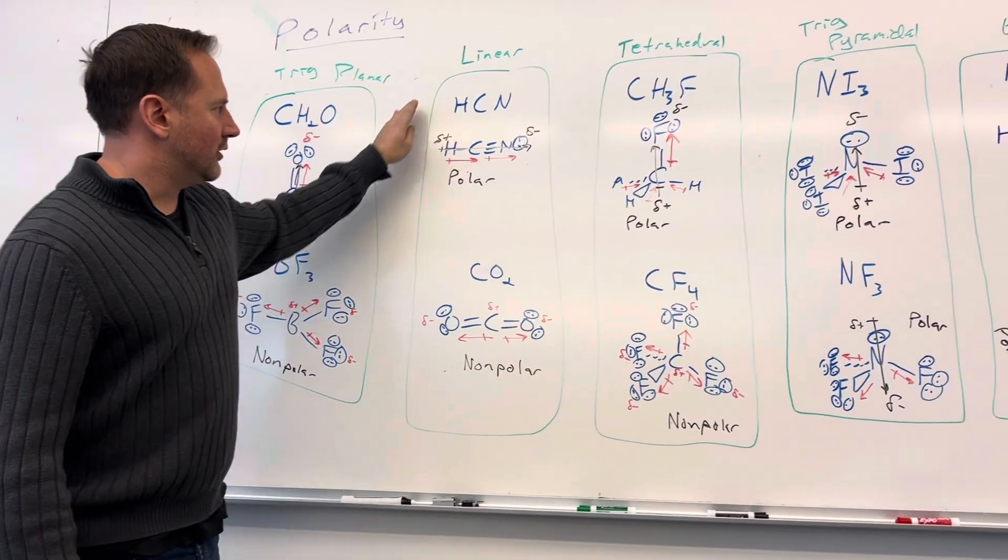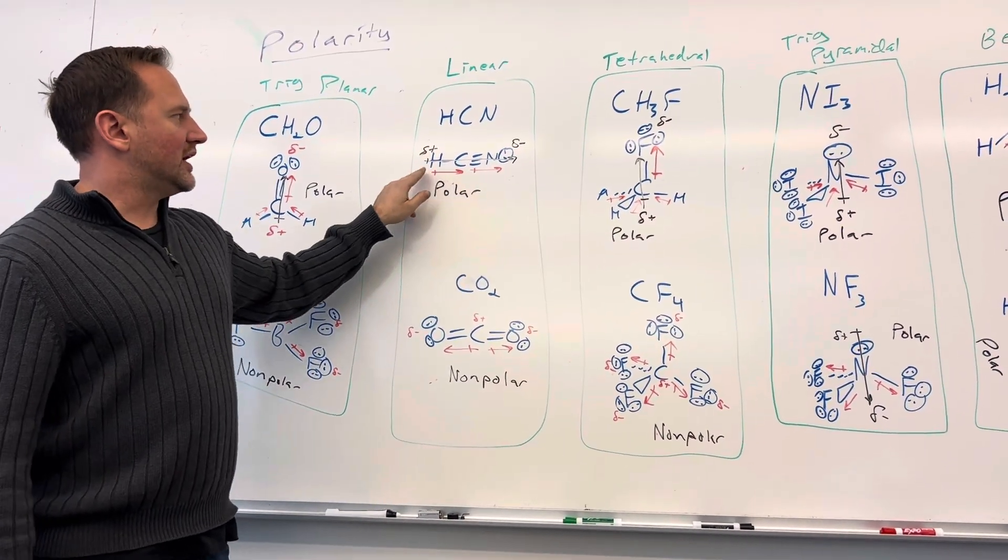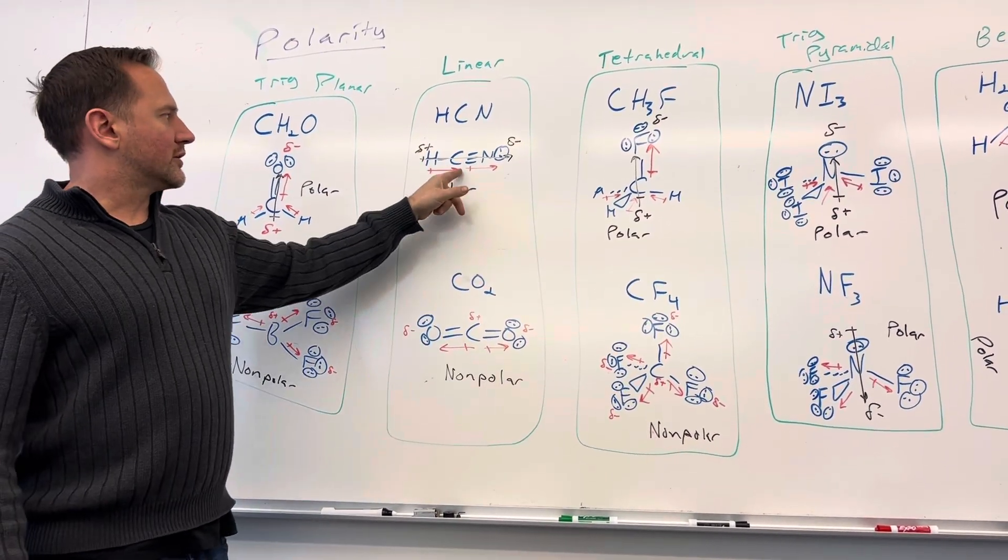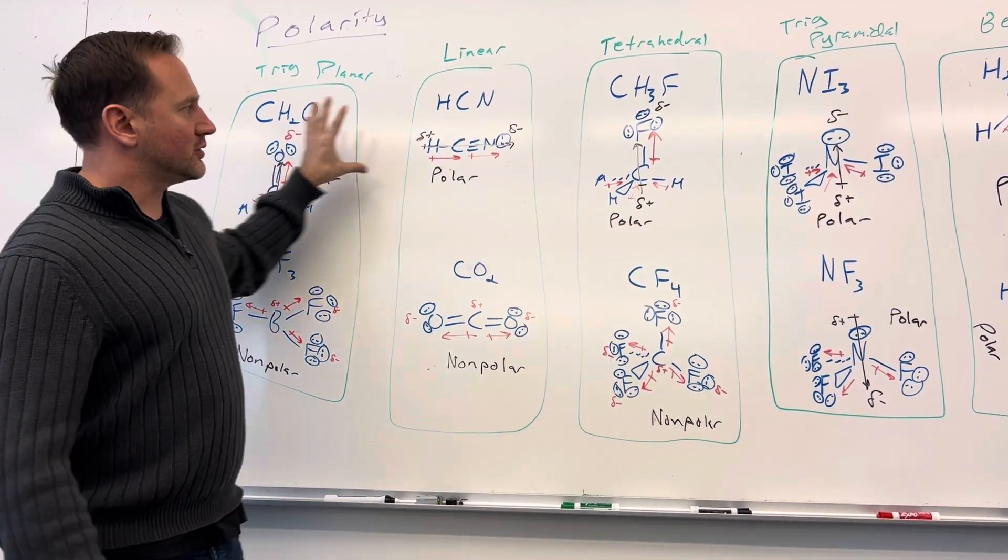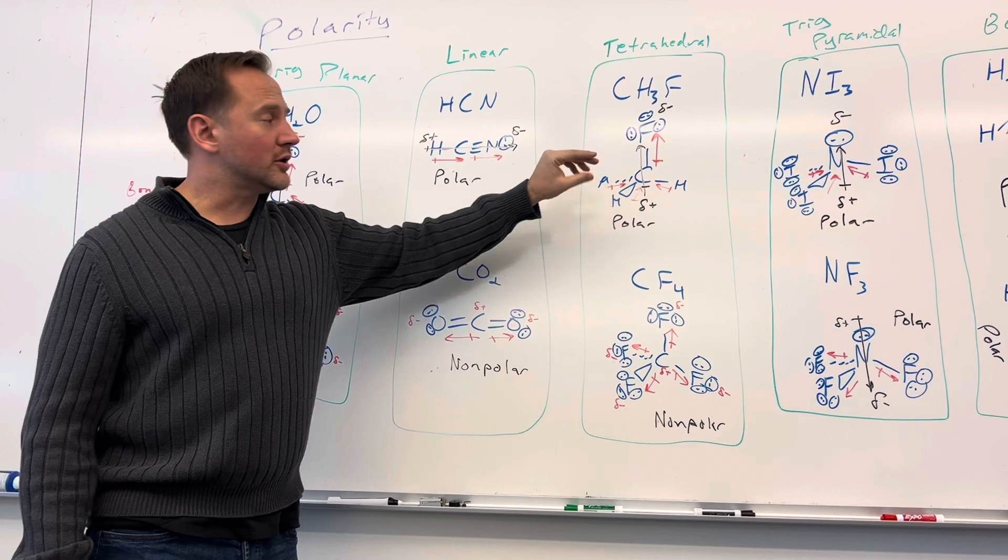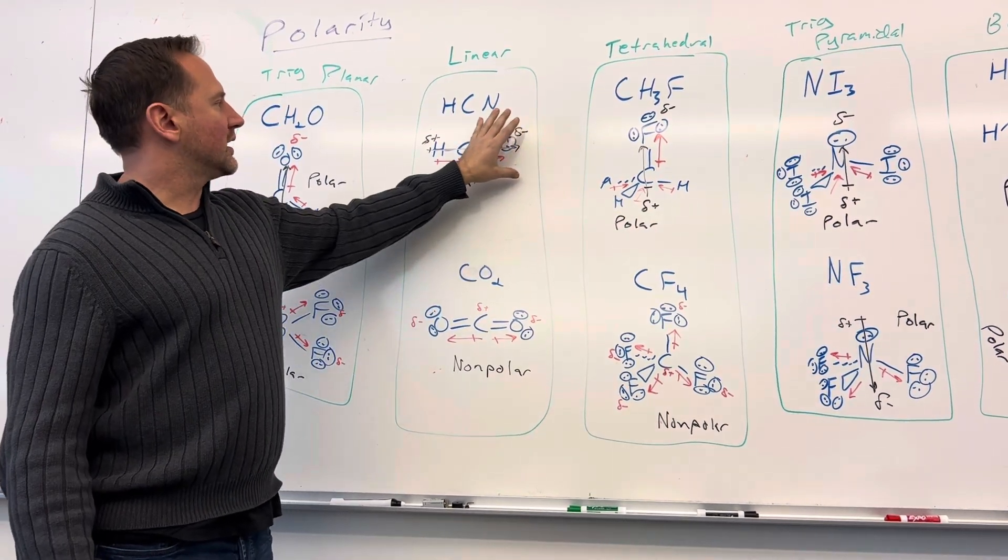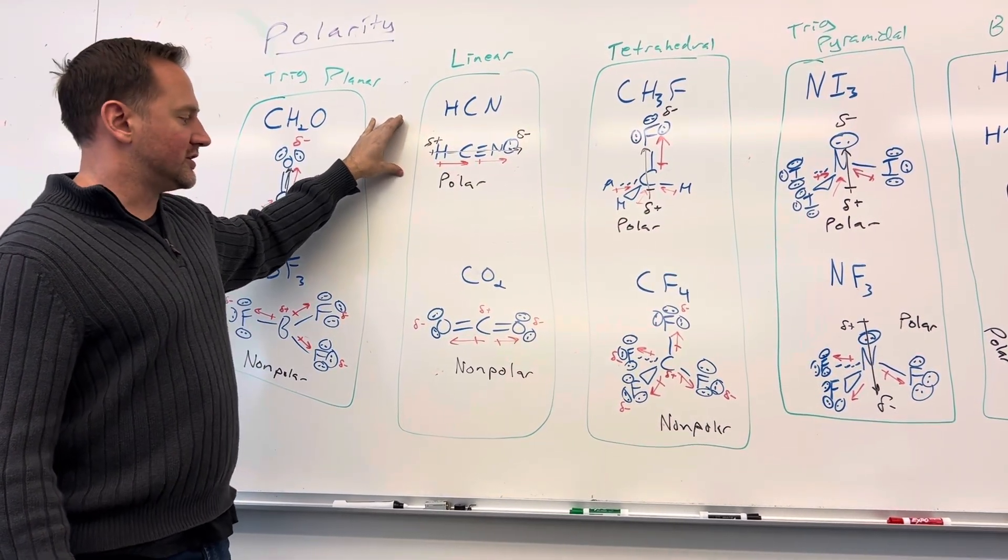Linear, we see the same deal. In this first molecule, HCN, carbon's more electronegative than hydrogen, but nitrogen's more electronegative than carbon. So the electrons get pulled to the nitrogen end of the molecule, leaving that end partially negative and the hydrogen end of the molecule partially positive.